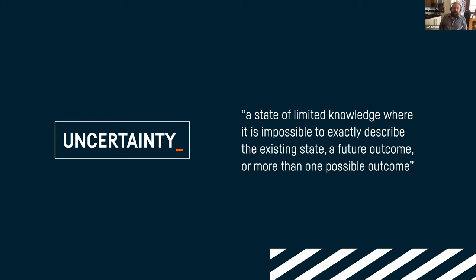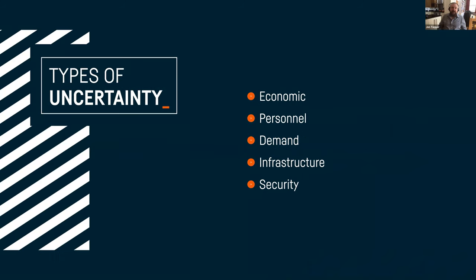No slide deck is complete without a Wikipedia definition. Uncertainty is defined as a state of limited knowledge where it is impossible to exactly describe the existing state, a future outcome, or more than one possible outcome. When we talk about uncertainty in business or infrastructure terms, there are several types to consider.